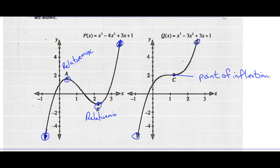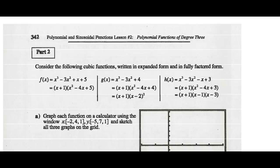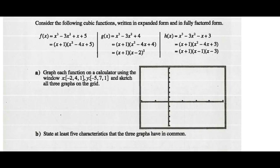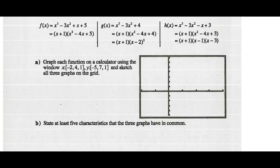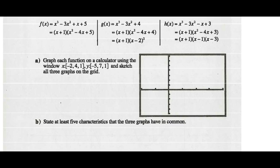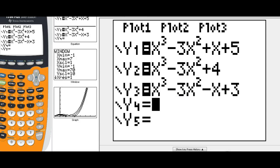Let's look at part 2 on the next page. Consider the following cubic functions written in expanded form and in fully factored form. We can write a cubic function in another form. Graph each function on a calculator using the given window and sketch all three graphs on our grid. Let's type these into our graphing calculator.